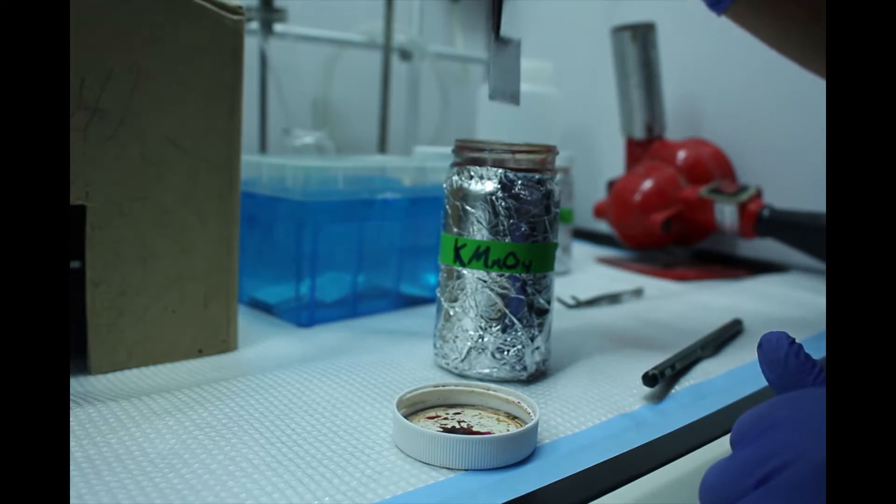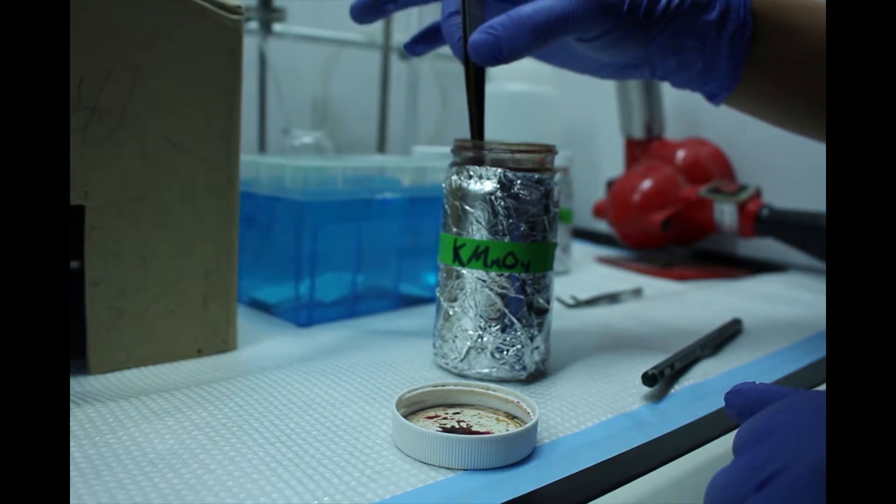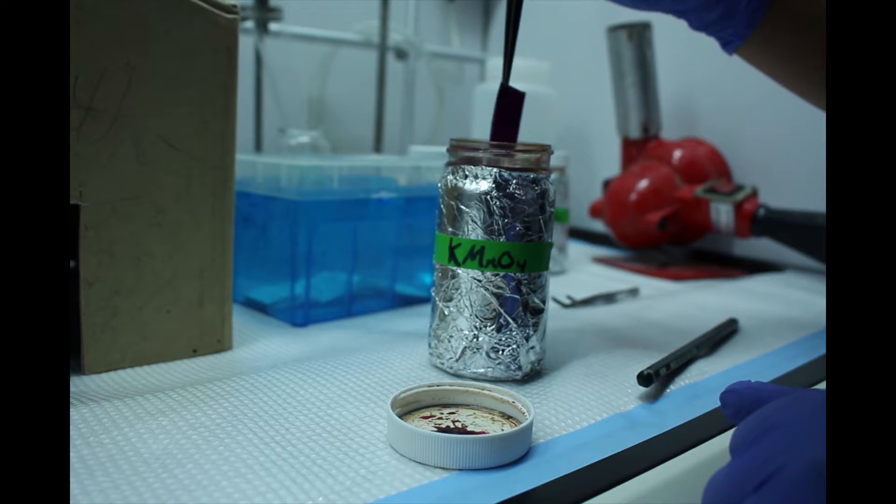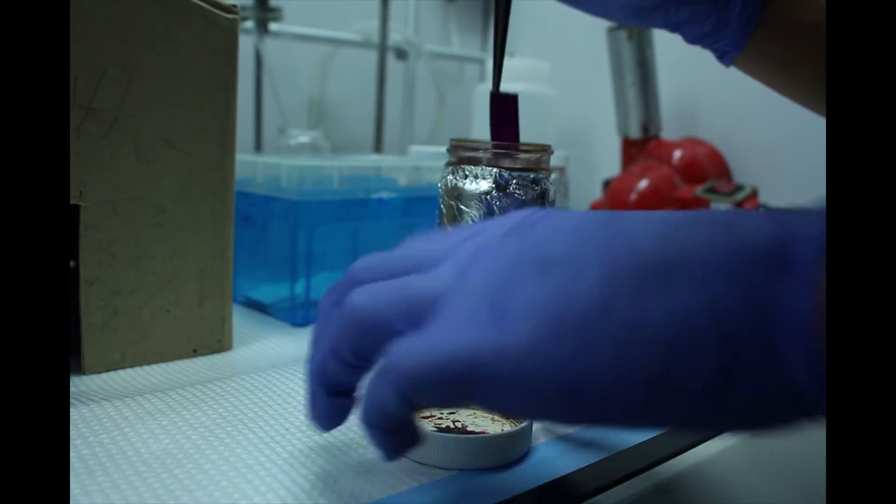Next, choose a stain based on the functional groups of your mixture to further visualize your TLC plate. Only one stain may be used per plate. We will use potassium permanganate.